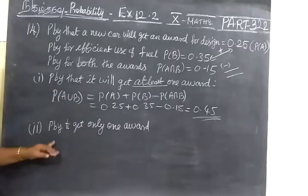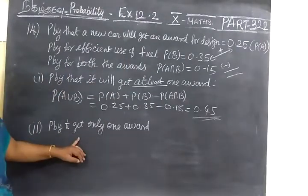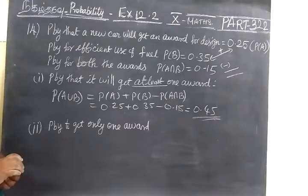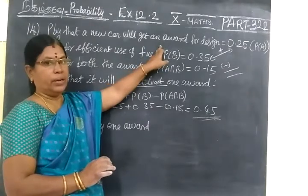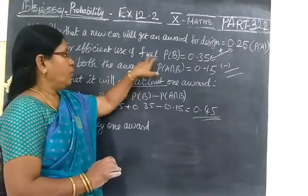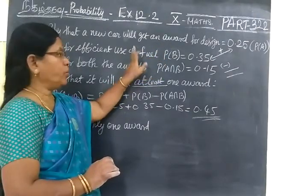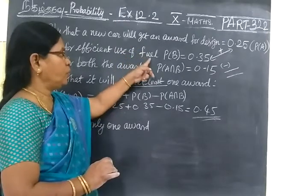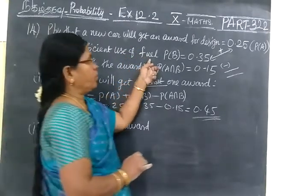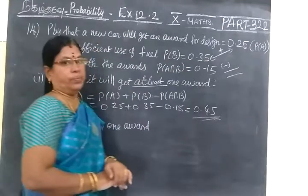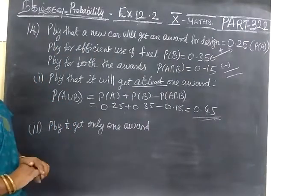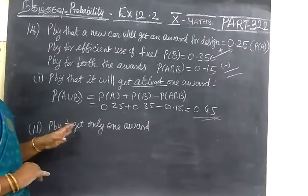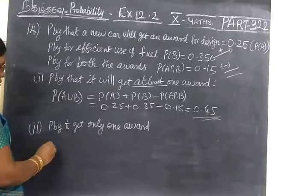Then next it is given probability it will get only one award. That company is giving award for only one. That means if they give award for design, they won't give it for fuel. Suppose once if they give it for fuel, another award for design is not allowed. So they are giving award for any one, whether it may be design or fuel.